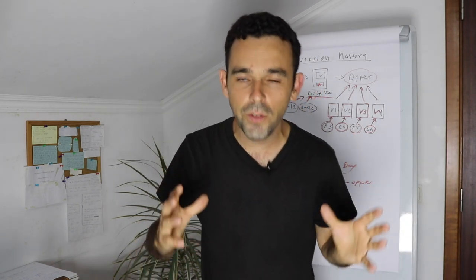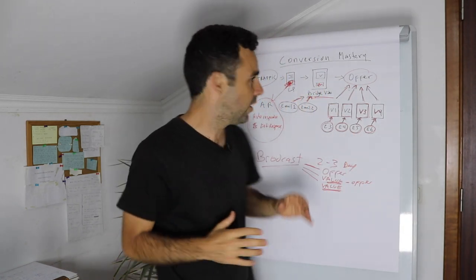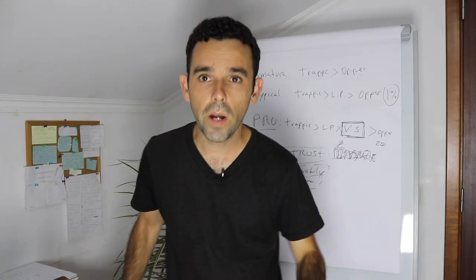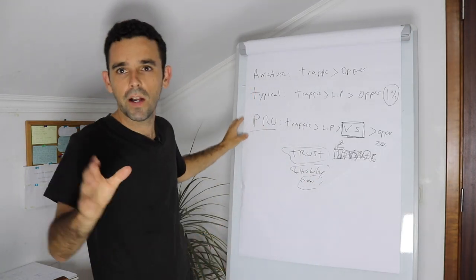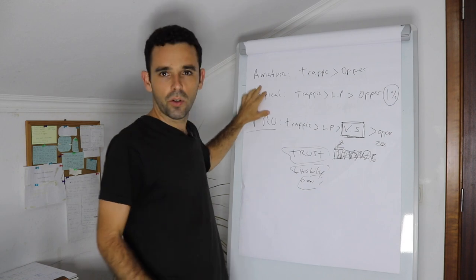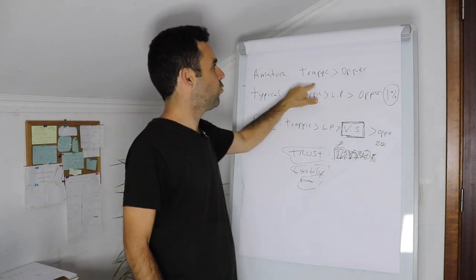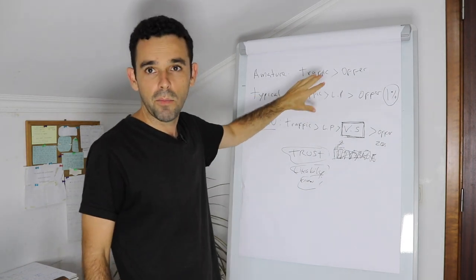Alright, so this video is an overview of the value series. A value series is this. Before we go to the overview, let me show you why the value series. Now, the amateur, what he does, normally he sends traffic to an offer. That's what amateurs do.